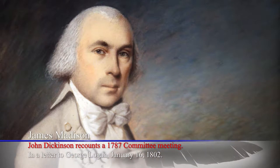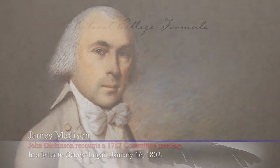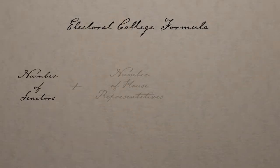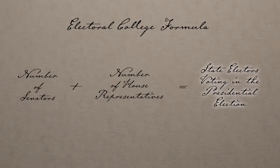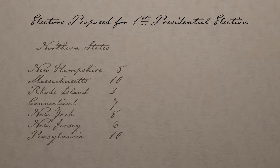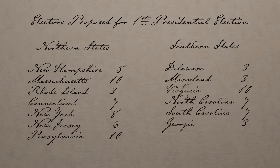James Madison took a pen and paper and sketched out a mode for electing the president. Madison sketched out a formula whereby each state would choose electors equal to the state's total number of senators and representatives. This electoral college would then elect the president, making him elected by the people through an electoral college. A last-minute change, but what a huge change it was — the elaborate electoral system would have profound consequences for the balance of power between northern and southern states.